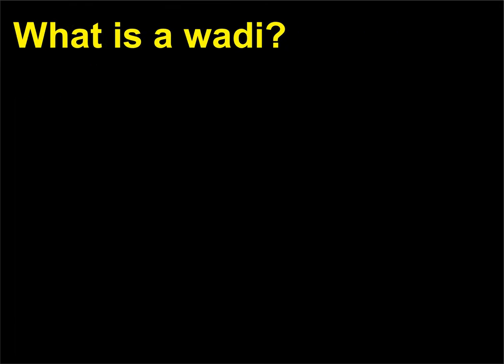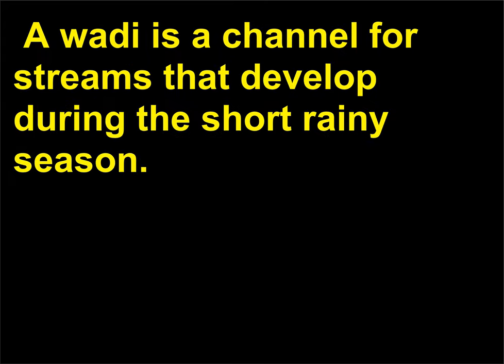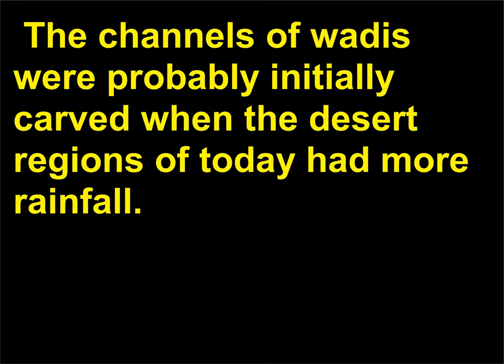What is a wadi? Wadi is the Arabic word for a gully or other stream bed that is dry for most of the year. A wadi is a channel for streams that develop during the short rainy season. The channels of wadis were probably initially carved when the desert regions of today had more rainfall.